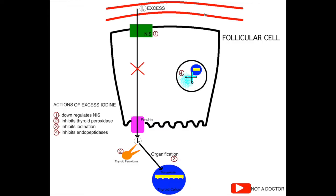Now let's see how exactly excess iodine affects the functioning of a follicular cell. When excess iodine is taken in, it causes formation of iodopeptides. These iodopeptides are responsible for the actions that occur due to excess iodine. First, it down-regulates the expression of the sodium-iodine symporter on the membrane of the follicular cell, which is responsible for the uptake of iodine from blood circulation into the follicular cell.